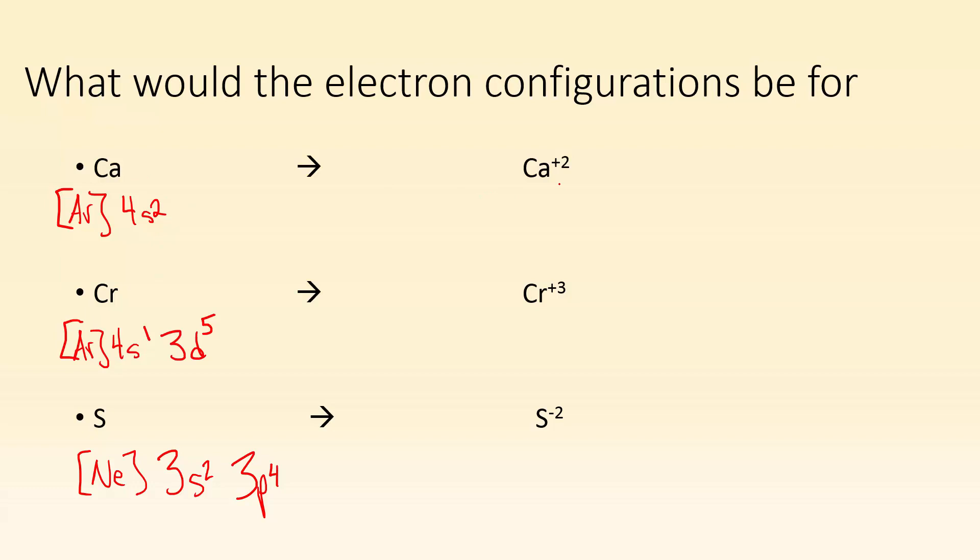So, again, if I'm going from calcium to calcium plus 2, I have to lose 2 electrons. So this is the electron configuration for calcium. The highest principal energy level that I can remove electrons from is the fourth one. So I'm going to lose those two. And I'm just going to end up with the same configuration as argon.